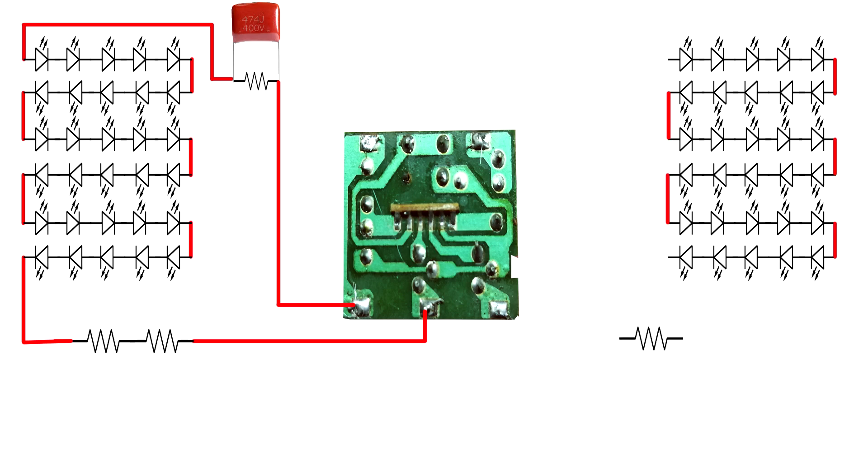Connect the 1K 1-watt resistor in series. Connect the last LED negative pin to the resistor. Set up the capacitor and connect the resistor to it. Connect the first LED positive pin to the capacitor. Connect the last LED resistor to channel 2.